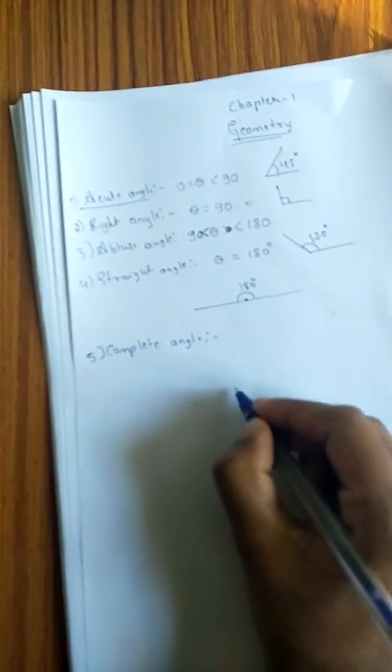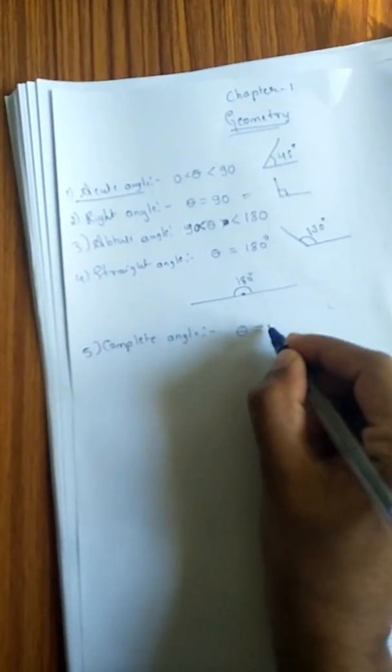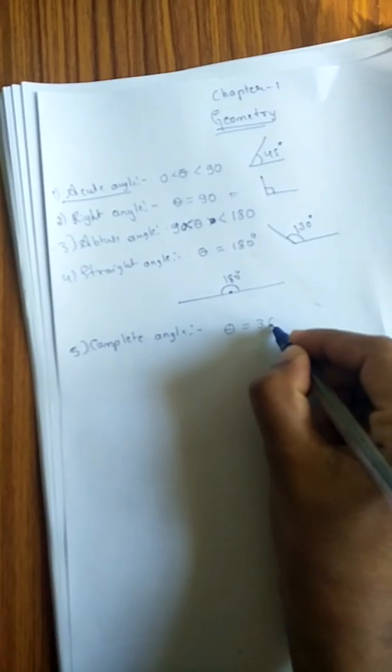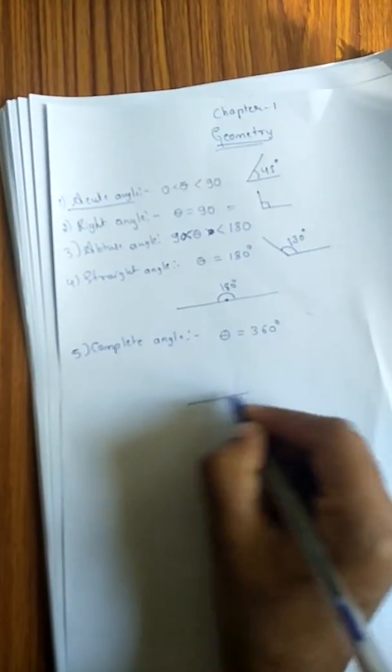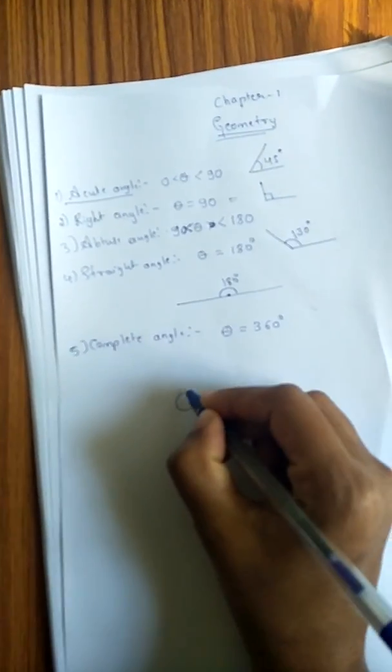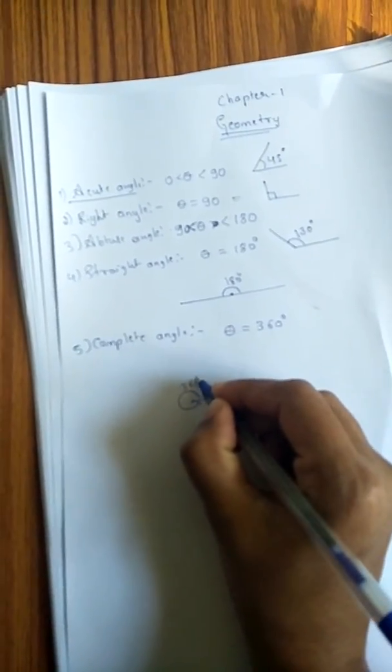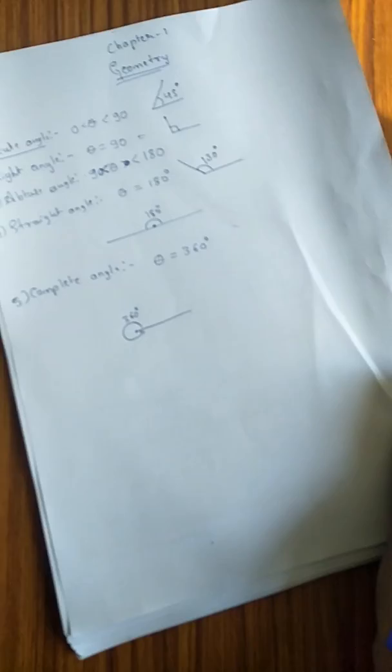Complete angle, theta equals 360 degrees. That is complete angle. Okay, complementary angle.